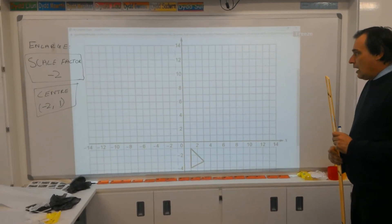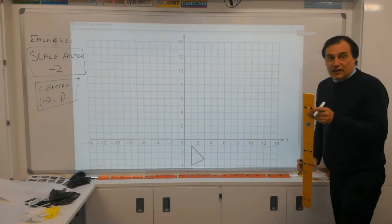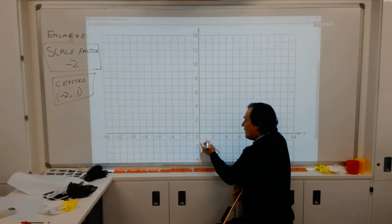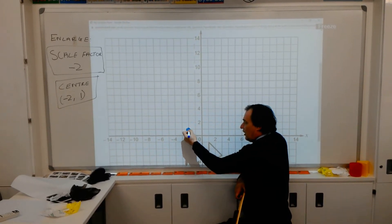So, negative scale factors. First of all, what we've got to do, we've got to mark our centre. Now, our centre over here is marked as minus 2, 1. So we go along minus 2 and 1. So this big blob here is going to be our centre.